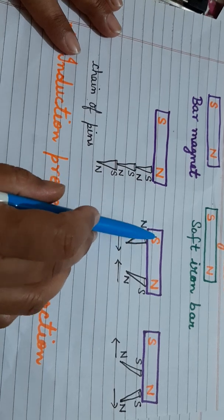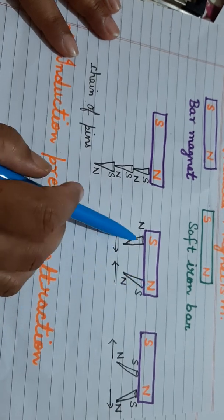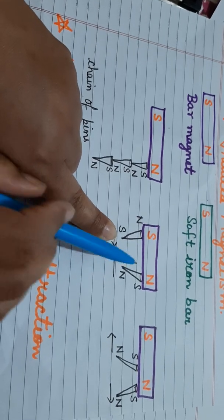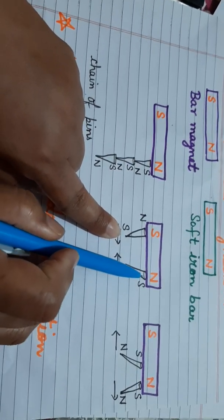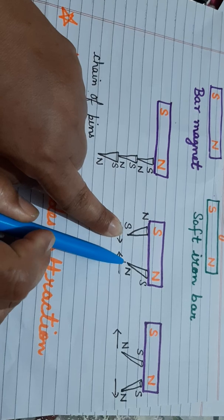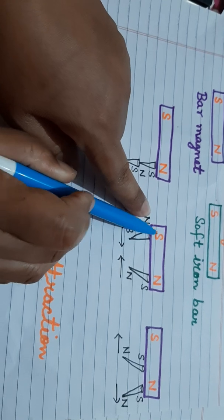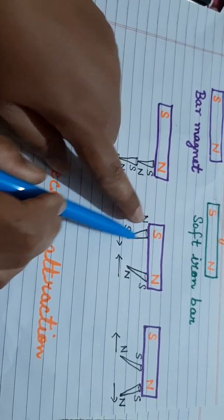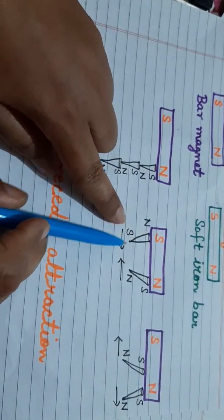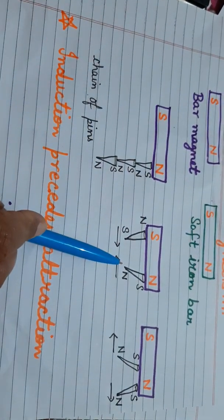In case 2, there is a bar magnet with north and south polarity, with one pin attached to the south pole and another to the north pole. The pin attached to the north pole acquires south polarity at its near end and north at the far end. The pin attached to the south acquires north polarity and south at the far end. These unlike poles attract each other.